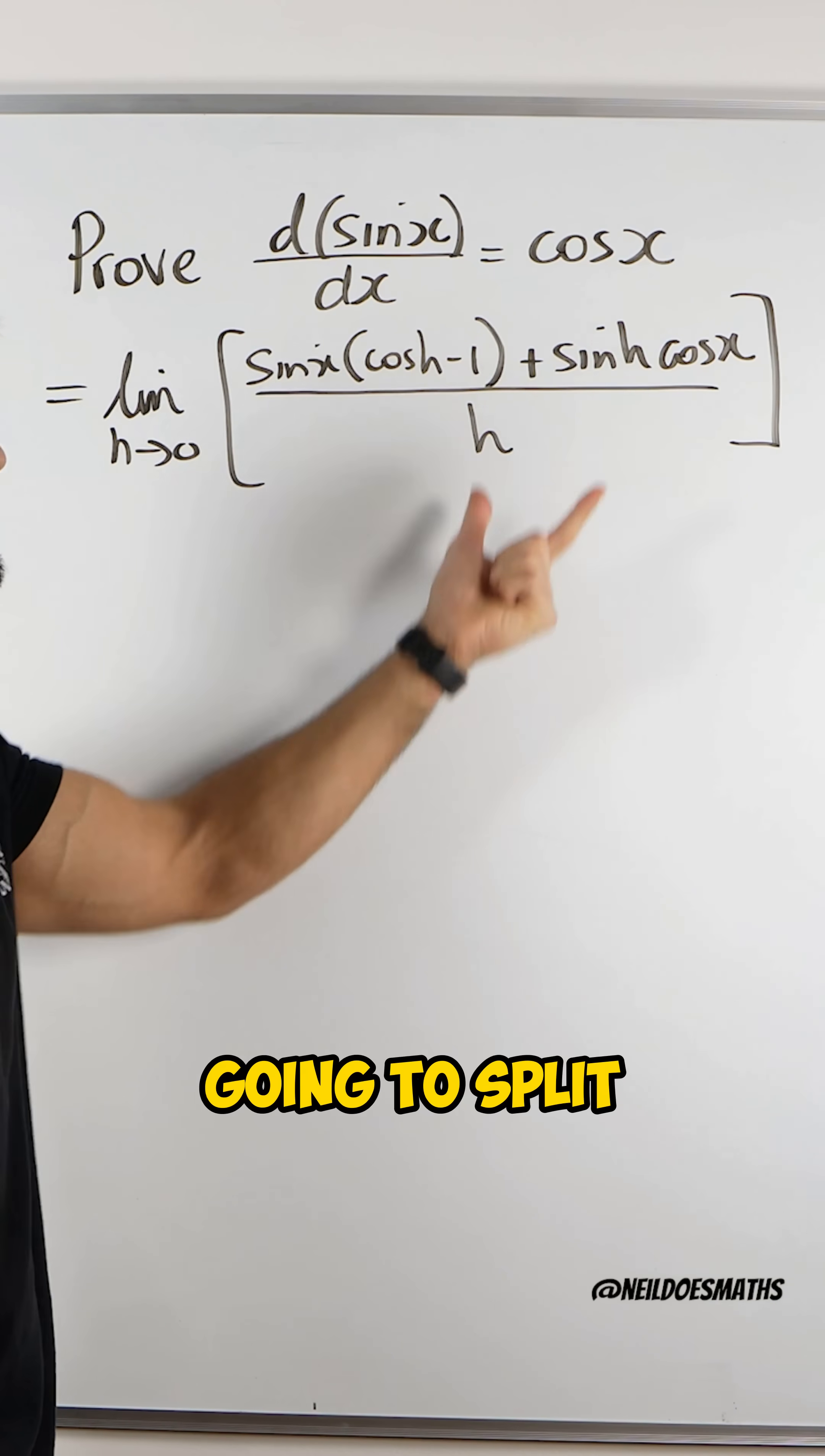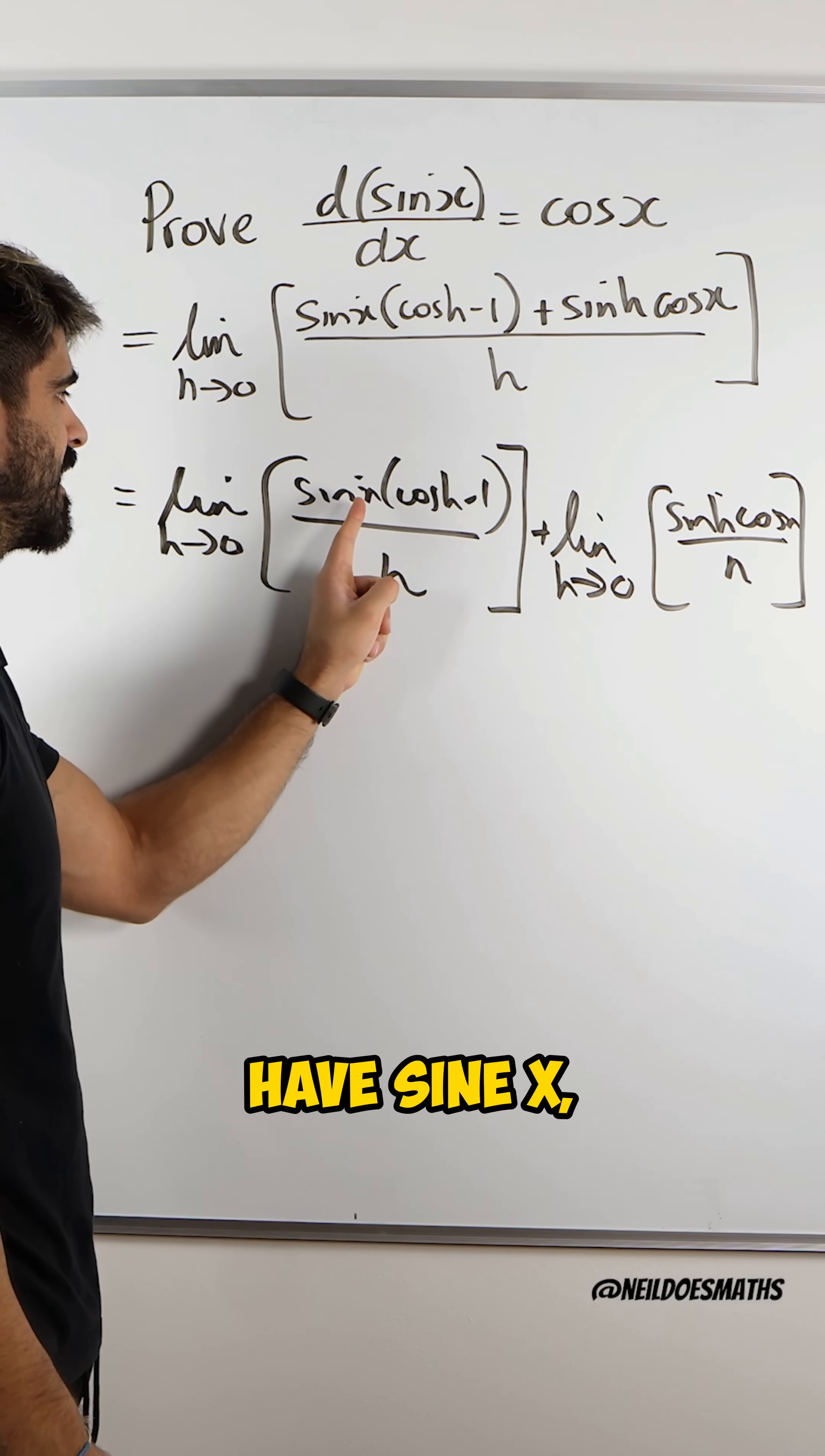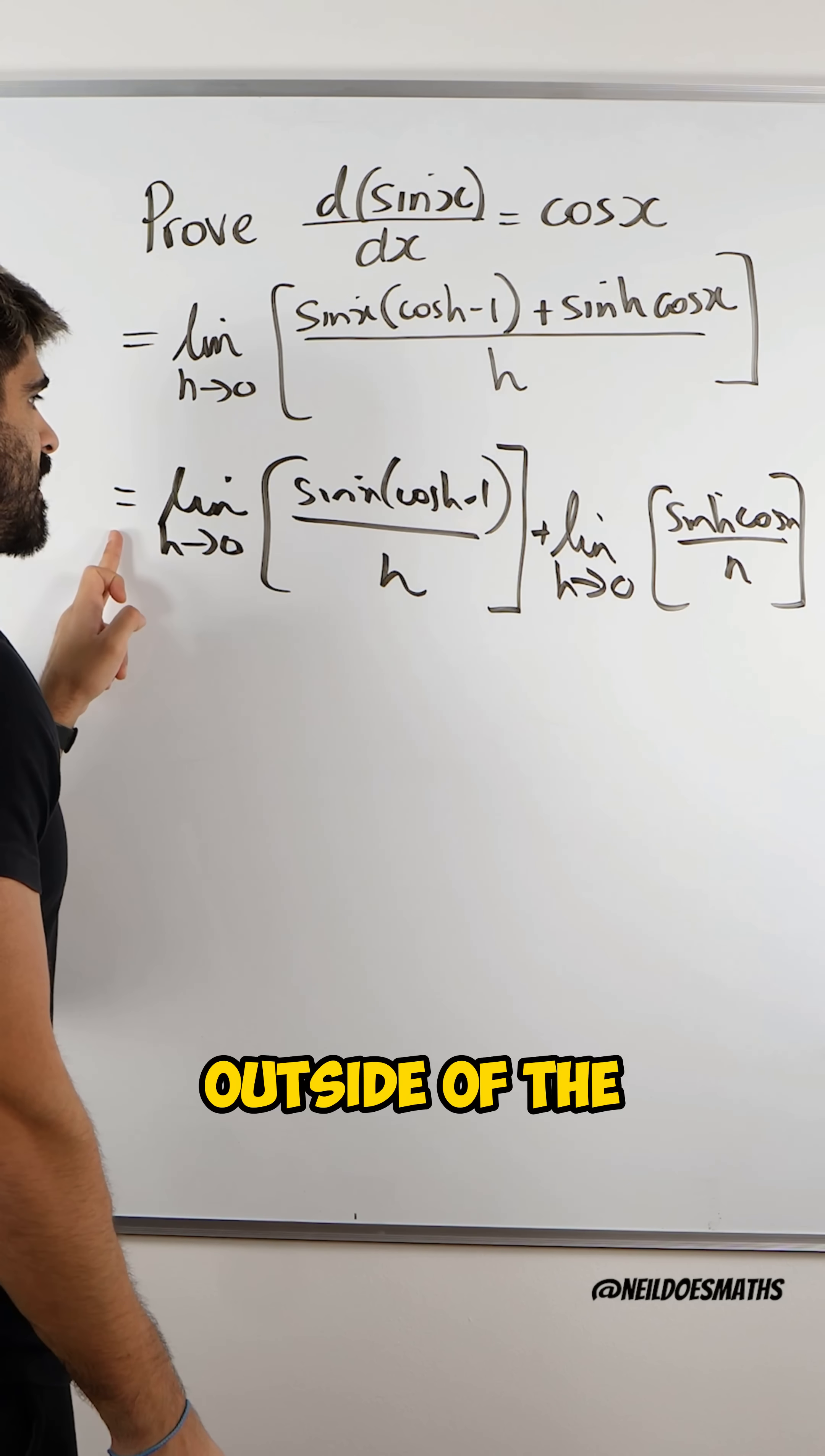The next thing we're going to do is split this fraction. This plus separates these two terms. Now both of these limits depend on h. Within this, we have sin(x), which has nothing to do with h. So it's actually a constant value with respect to h.